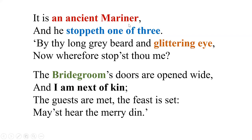Part one begins: 'It is an ancient Mariner, and he stoppeth one of three.' One of three refers to wedding guests going to attend a wedding. The Ancient Mariner stops one of them. 'By thy long grey beard and glittering eye, now wherefore stopp'st thou me?' The wedding guest asked why he was being stopped. Notice the description of the glittering eye — throughout the poem, the Ancient Mariner's eyes have a mesmerizing power.